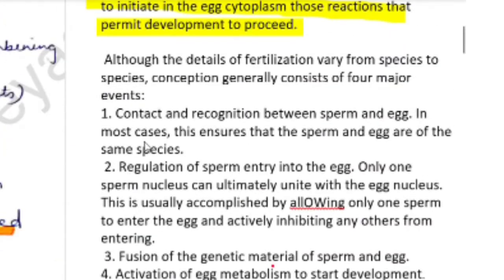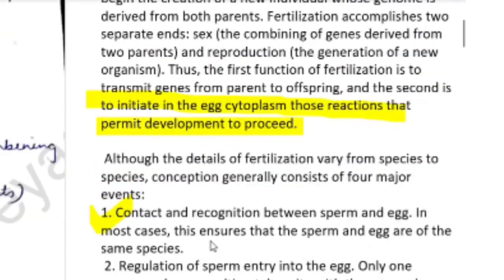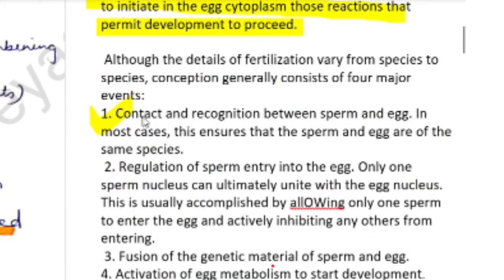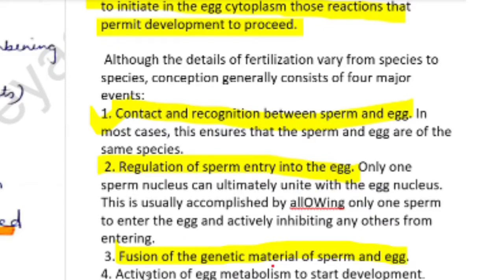There are four major events: first, contact and recognition between sperm and the egg; second, the regulation of sperm entry into the egg; third, the fusion of genetic material of sperm and egg; and fourth, the activation of egg metabolism to start development.